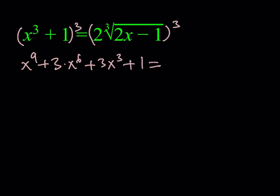On the right hand side, when you cube the radical, you're going to get what's inside, which is 2x minus 1. But it's also going to be multiplied by 2 cubed, which is 8. So we should be getting something like 8 times the quantity 2x minus 1.